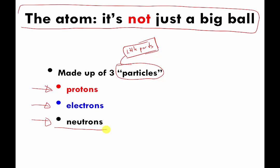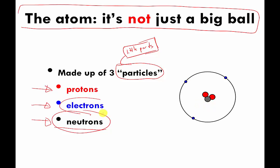In my cartoon version of drawing protons, electrons, and neutrons: the protons are going to be red colored circles of a certain size. The neutrons are going to be the same size circle except they're going to be gray colored. The electrons are going to be smaller circles and they're going to be blue colored — small and blue. The colors are just random; I just sort of picked them for no particular reason.